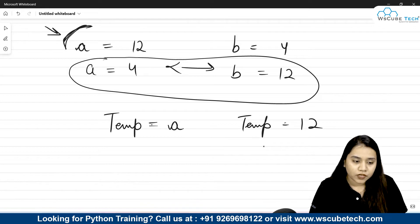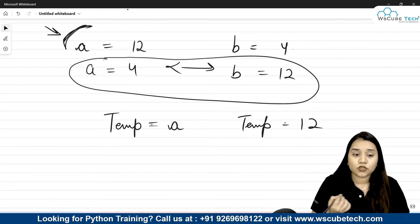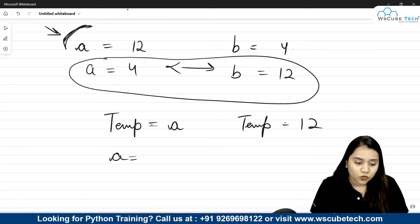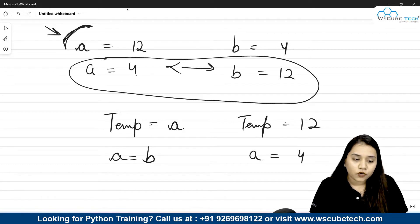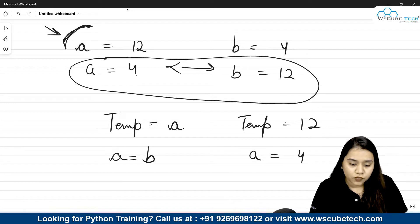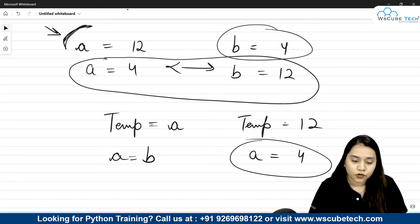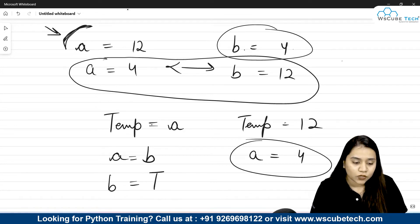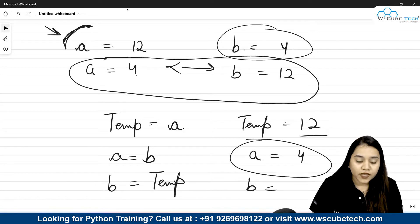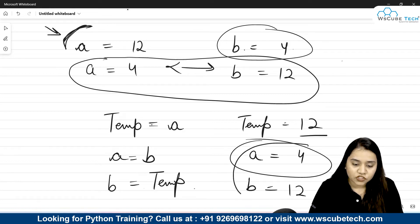Now I can store the value of b inside a, because we need to do the swapping. So a is equal to b, which gives us that the value of a becomes 4. At this point both a and b hold the value 4. To insert 12 into b, we write b is equal to temp, since temp is holding the value 12. So the value of b becomes 12, and we achieve our target: a becomes 4 and b becomes 12 using a temporary variable.